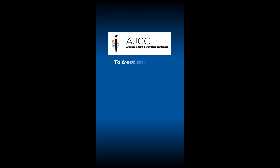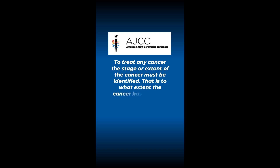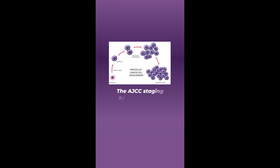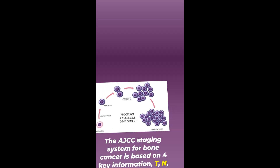To treat any cancer, the stage or extent of the cancer must be identified — that is, to what extent the cancer has grown or spread in the body. The formal staging system for cancer is the American Joint Committee on Cancer, AJCC, staging system. The AJCC staging system for bone cancer is based on four key pieces of information: T, N, M, and G.